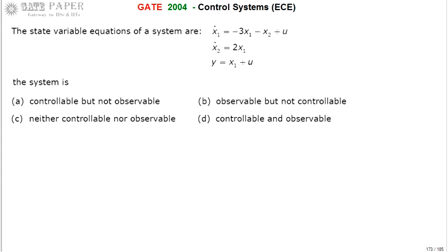Hello, we are discussing the GATE 2004 EC paper. Look at the state variable equations of a system and find whether the system is controllable or not, and whether observable or not. You have to choose the right option from the given four options. First, write it in the standard state space form: x̄˙ = Ax + Bu and y = Cx + Du.